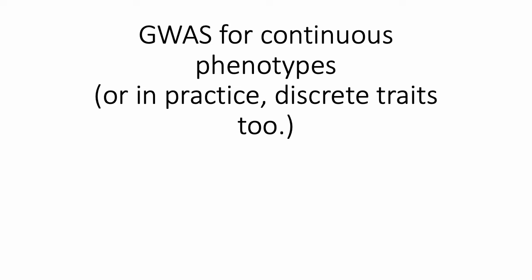That concludes our discussion about association studies for binary phenotypes. We'll spend the rest of the lecture talking about association studies for continuous phenotypes like height or BMI. In practice, association analysis methods for continuous phenotypes are much better developed than those for binary phenotypes, in part because it's much easier to correct for confounding variables like population structure or family relatedness.